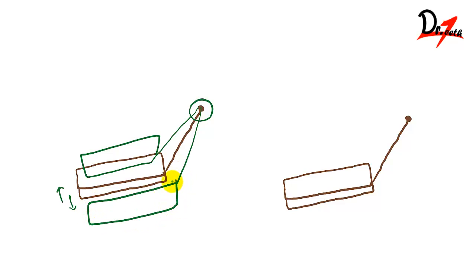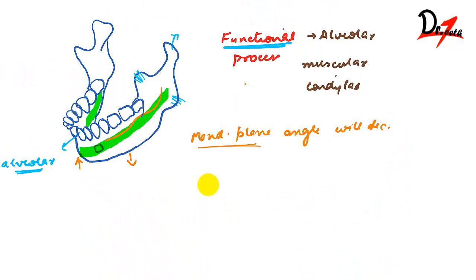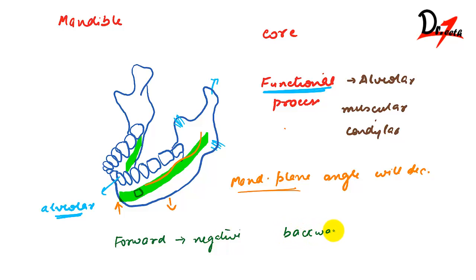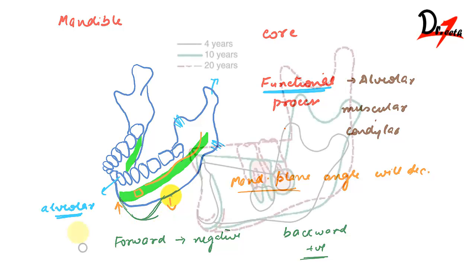If there is more growth posteriorly than anteriorly, the rotation is said to be forward and is given a negative sign. Rotation is considered backward and given a positive sign if the anterior dimensions are increasing in length more than the posterior, which will bring the chin downward and backward.